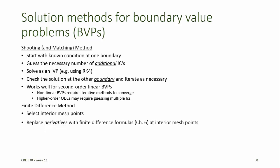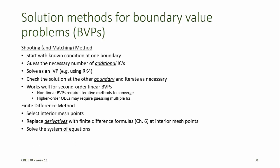In the finite difference method, we select interior mesh points and then replace the derivatives at those interior mesh points with finite difference formulas from Chapter 6 in the defining equation. This results in a system of equations that can be solved at each of the interior mesh points. In the collocation method, we approximate the solution using a function that's easy to evaluate and differentiate, and then we match that solution to constraints defined by the defining equation at points in the domain called the collocation points.